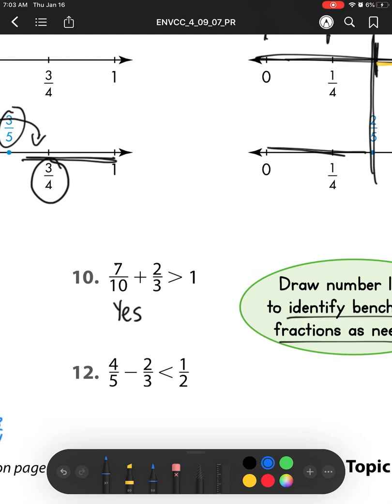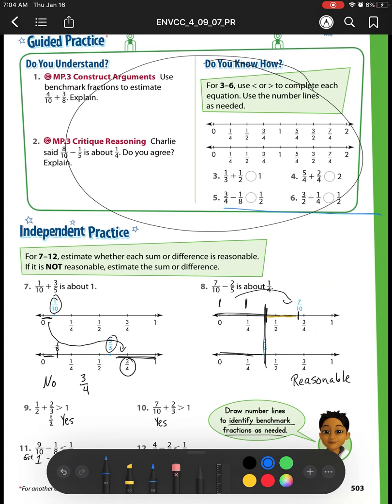For number 12, we have 4 fifths minus 2 thirds is less than 1 half. Well, I know this is almost 1 whole. 2 thirds is close to 3 fourths, or I also can just do it in my head—that is close to 2 thirds or 3 fourths, either one. But those answers are going to show me that yes, it is reasonable. Because if I do 1 third, I know 1 third is less than 1 half. And if I did 3 fourths, I would have 1 fourth, and I know 1 fourth is also less than 1 half. So this one is yes, it is reasonable.